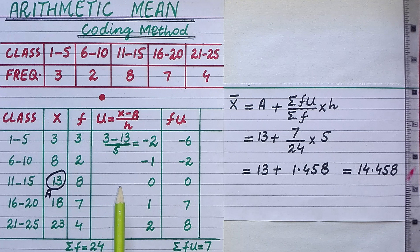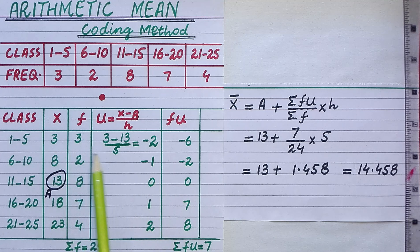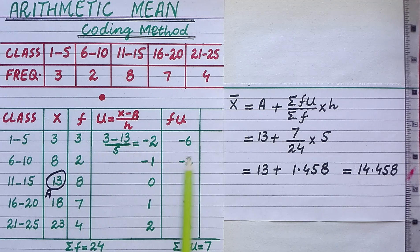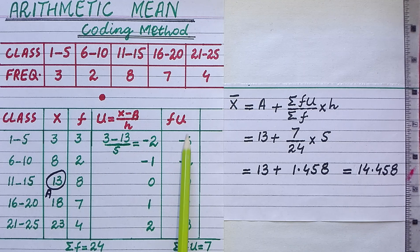After the coding variable column, we add the column of fu. To find fu for a class, multiply its frequency by its coding variable. For the first class, frequency is 3 and coding variable is minus 2, so fu is minus 6. For the second class, frequency is 2 and coding variable is minus 1, giving fu of minus 2, and so on.